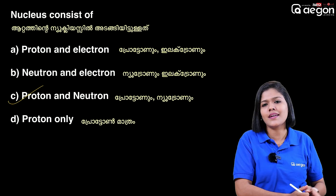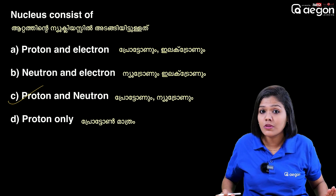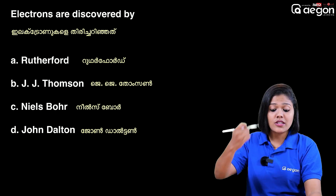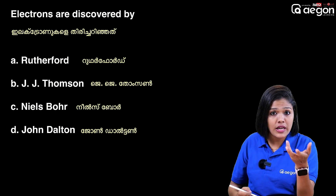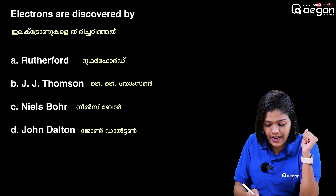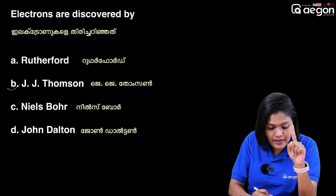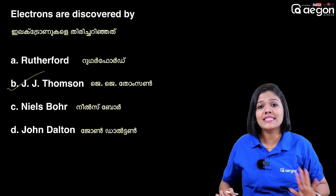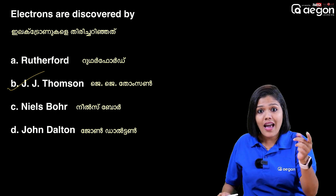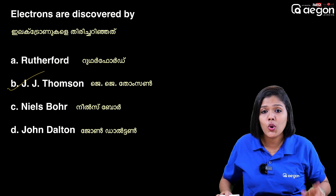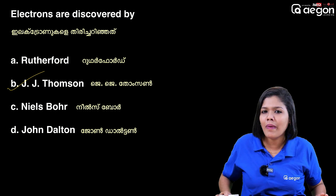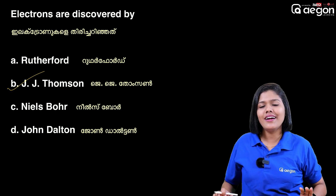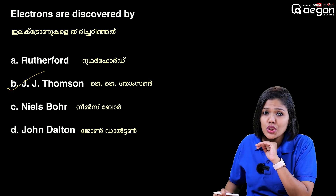It's the concept. Electrons are discovered by J.J. Thompson. That means J.J. Thomson discovered the electron, Rutherford discovered the proton, James Chadwick discovered the neutron.